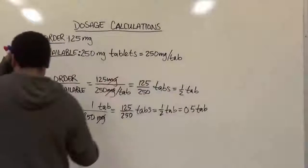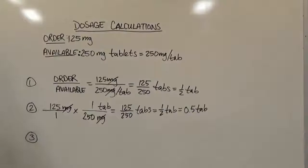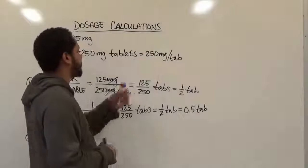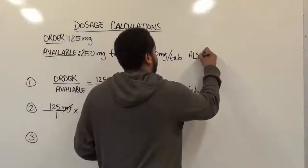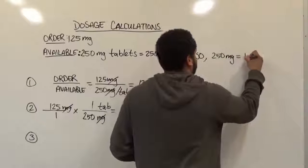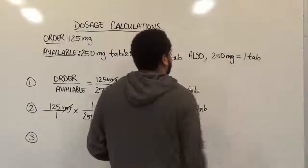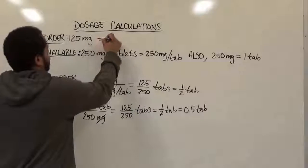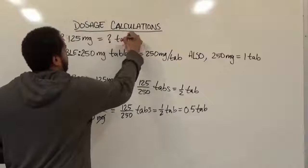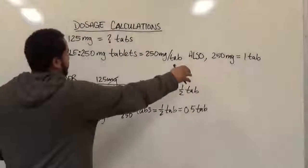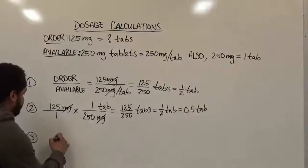Now let's go on to the last form of doing this, which is direct proportions. To do that, we take our order and what's available. Since we know 250 milligrams are equivalent to one tab, and we want to figure out how many tabs we'll have to give a patient, that number of tabs is our unknown.